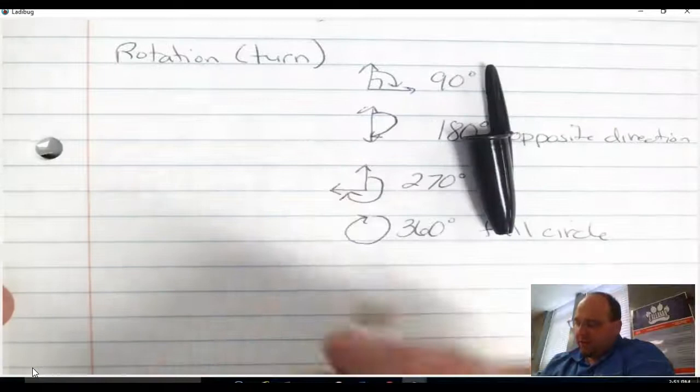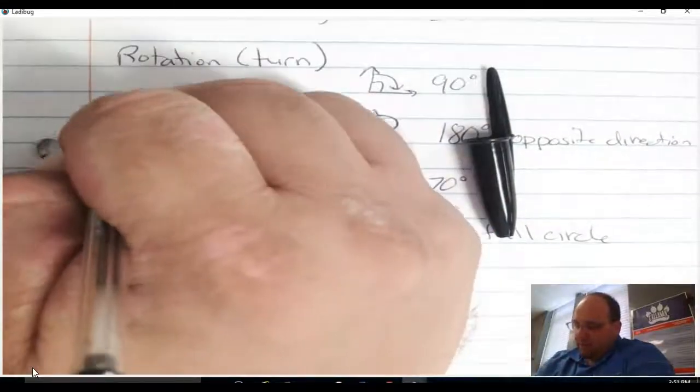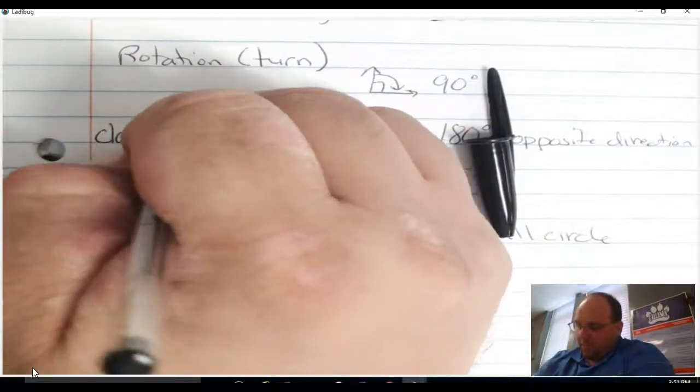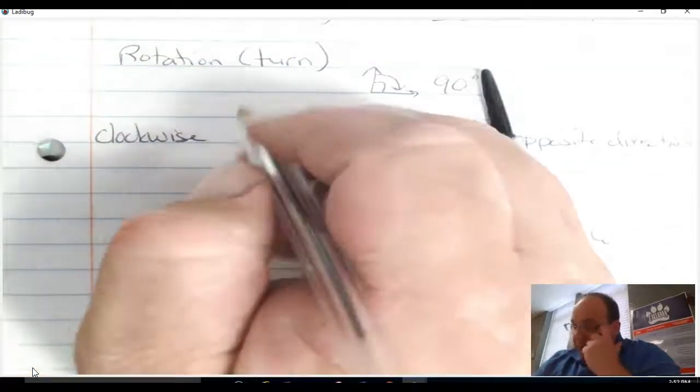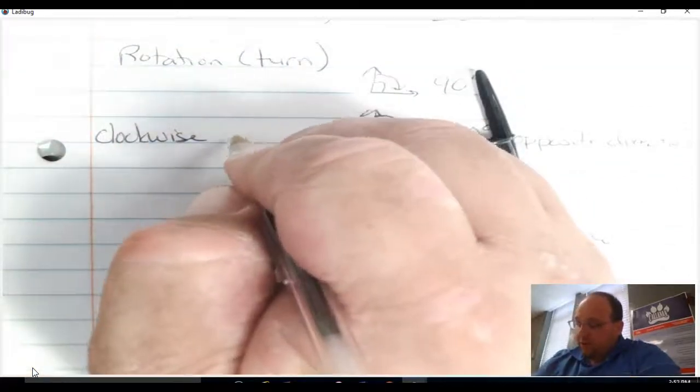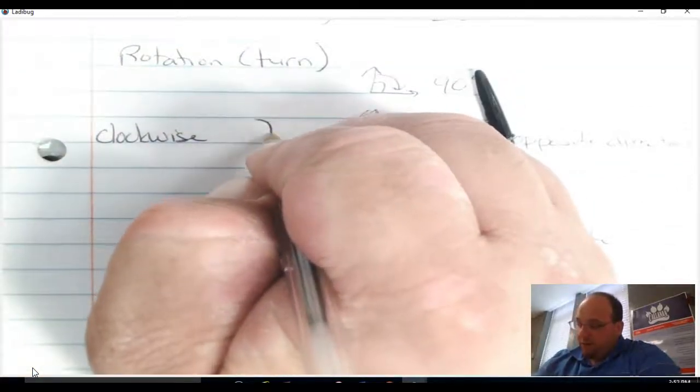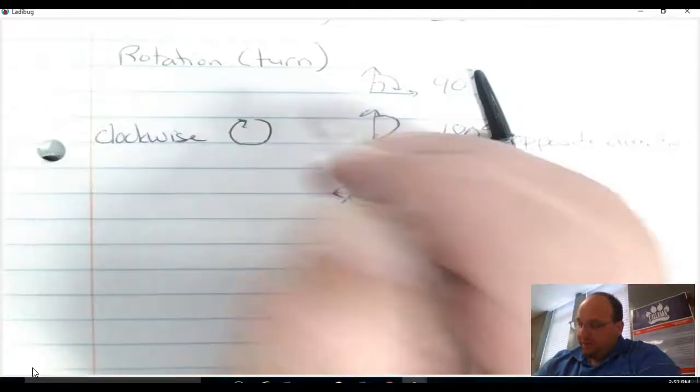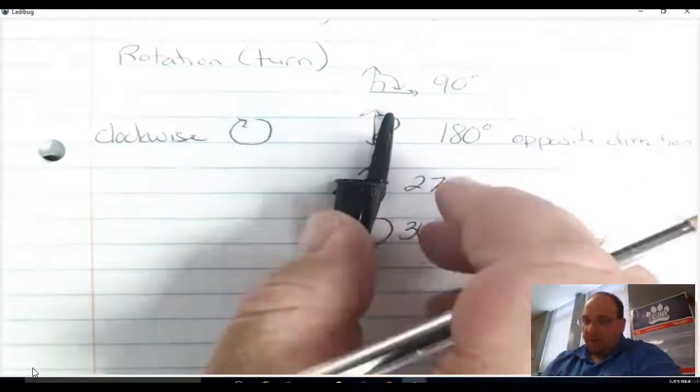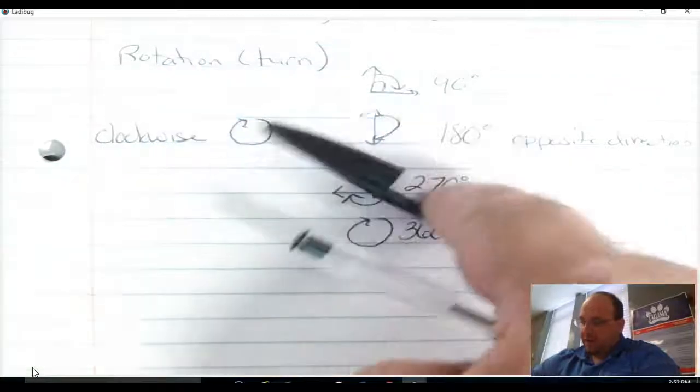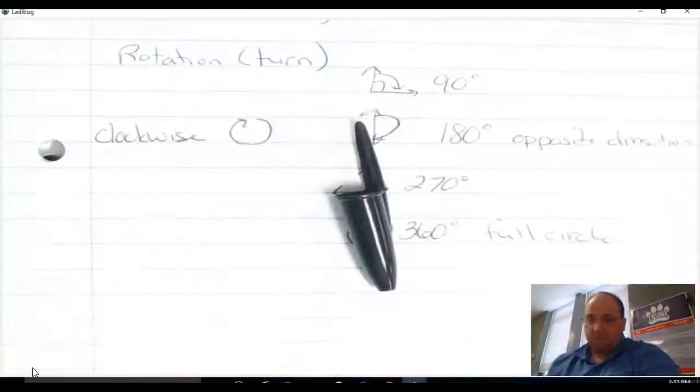One direction I can go is clockwise. Clockwise direction will go from right here, right, to left. So I was rotating in a clockwise manner. This is a clockwise rotation.